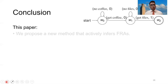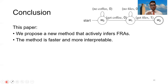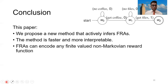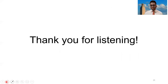In conclusion, in this paper we propose a new method that actively infers finite reward automatons. We show that the method is faster and more interpretable than other baseline methods, and that finite reward automatons can encode any finite-valued non-Markovian reward function. In the future, we can ask: what if our teacher is sometimes incorrect and doesn't always answer membership queries accurately? And what if we had multiple agents all working together towards a common goal? These are future research areas to explore. Thank you very much.